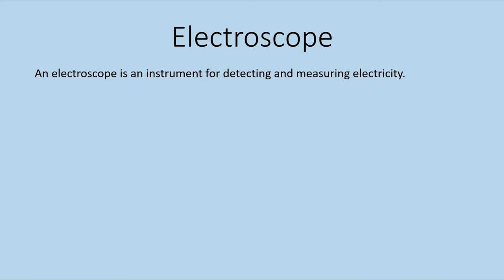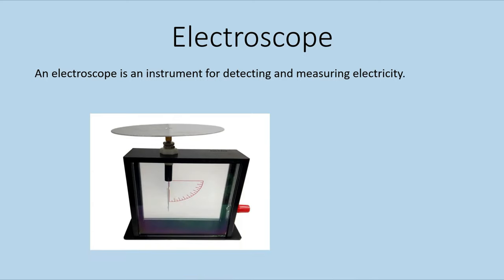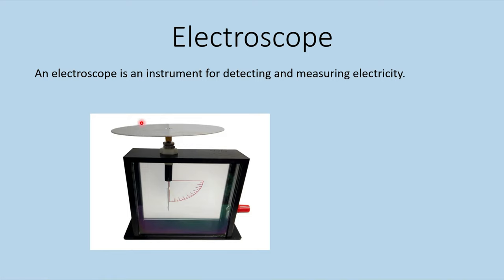First, the electroscope is an instrument for detecting and measuring electricity. It detects the existence of electric charge and can give an approximation of how strong this charge is. This is a real electroscope.